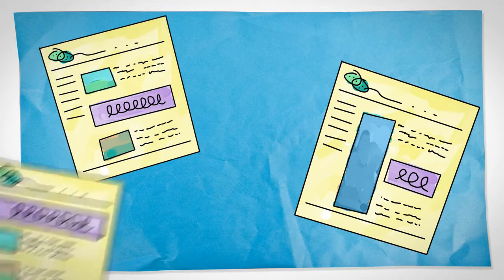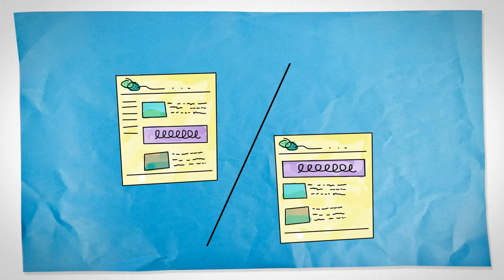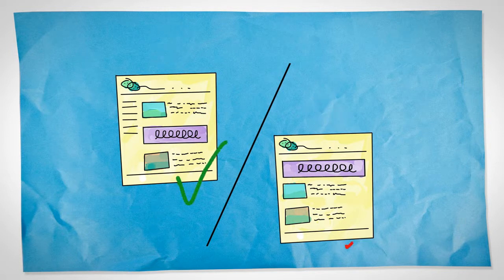For example, in your organization there are many opinions on which page design sells the most products. With A-B Testing, you simply set up two versions of the same page, send equal amounts of visitors to both pages, and compare the numbers. Now you know.